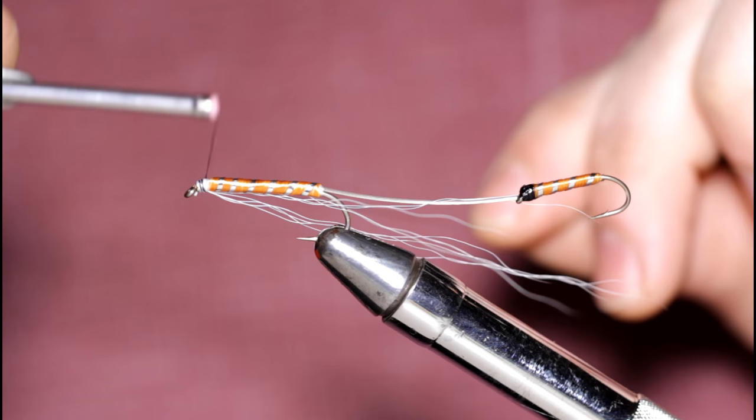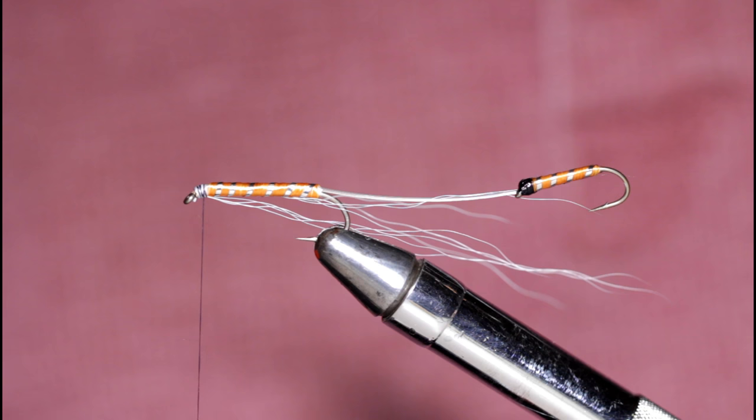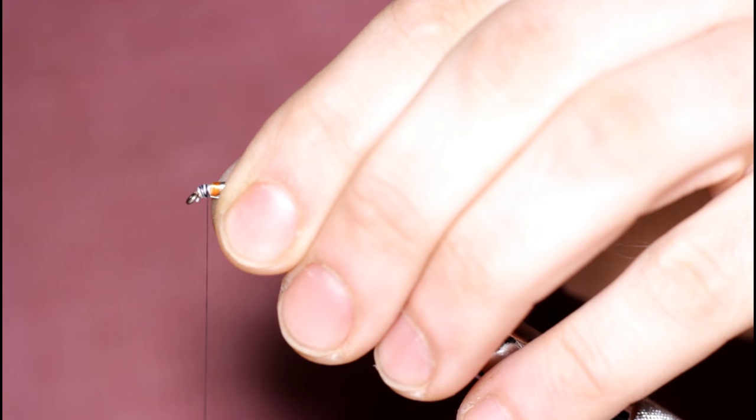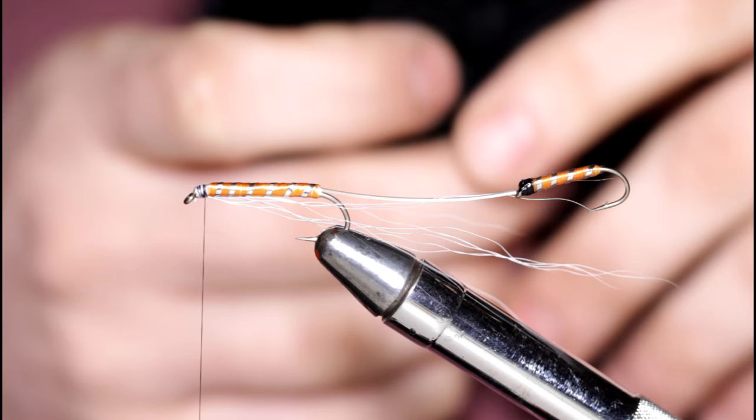And grab some black thread again. The size of this thread is 70 denier. I don't know if I mentioned that yet, but it is a smaller thread. That way I don't build up such a bulky head here. So I've got that attached.